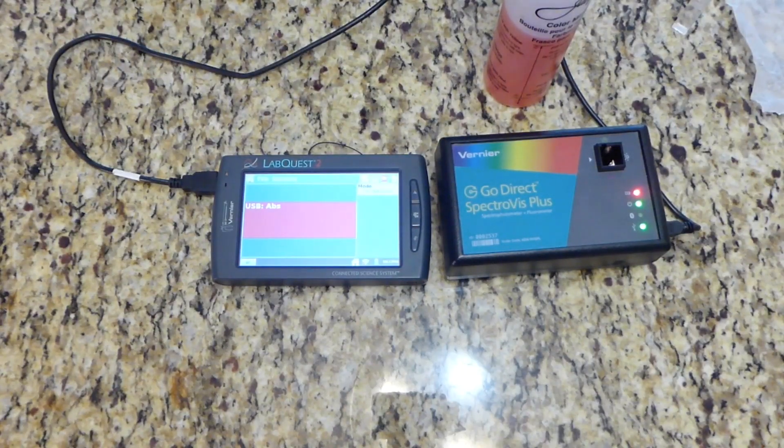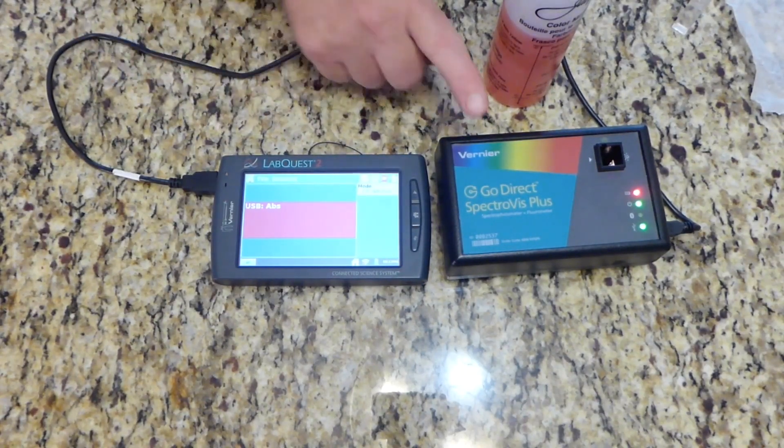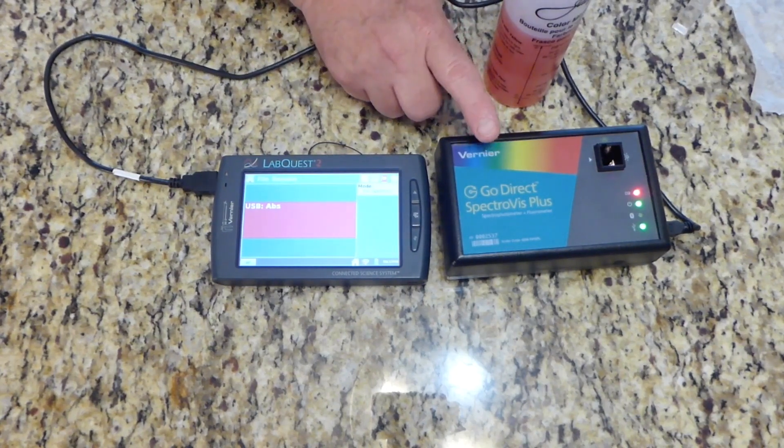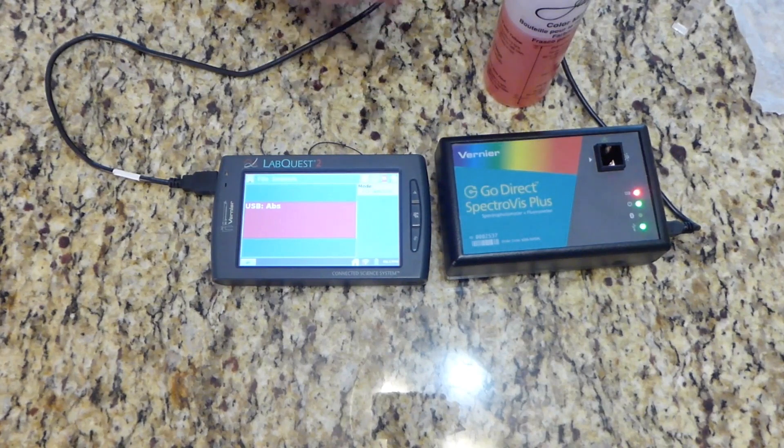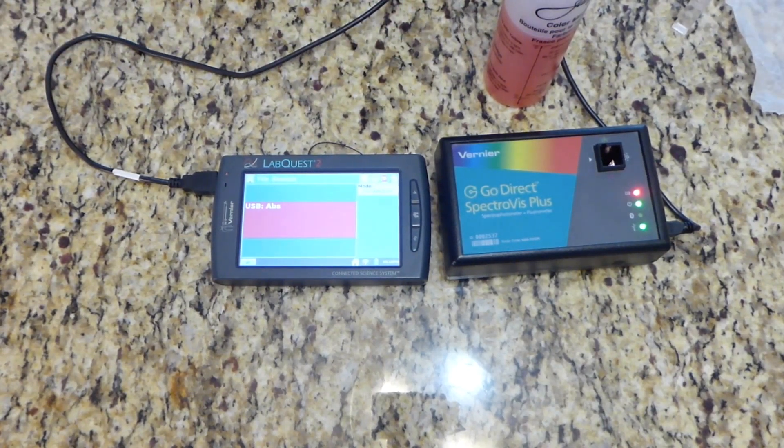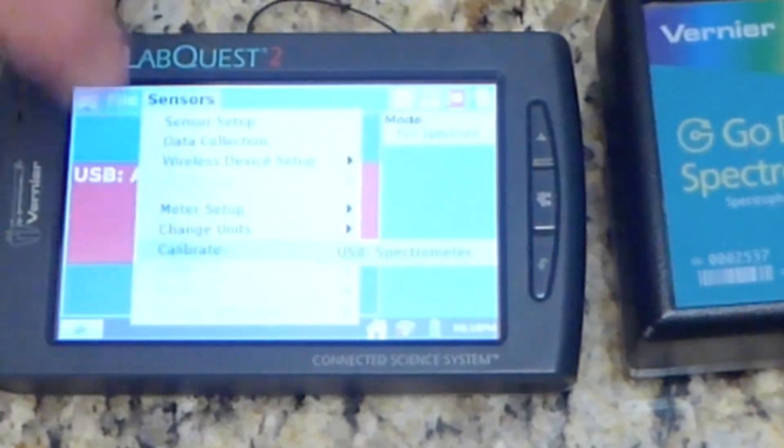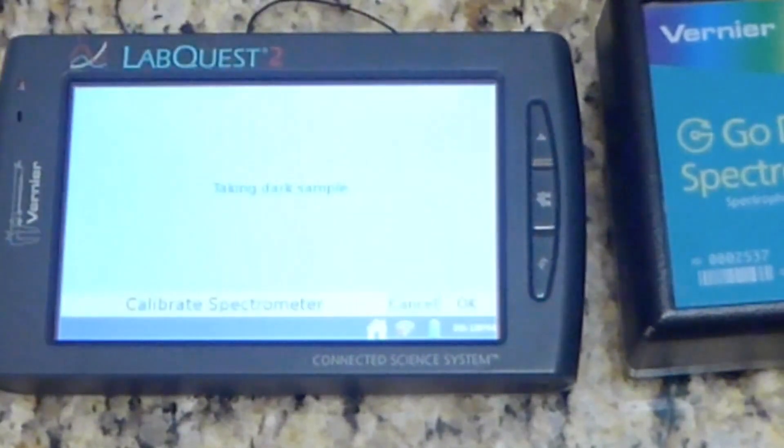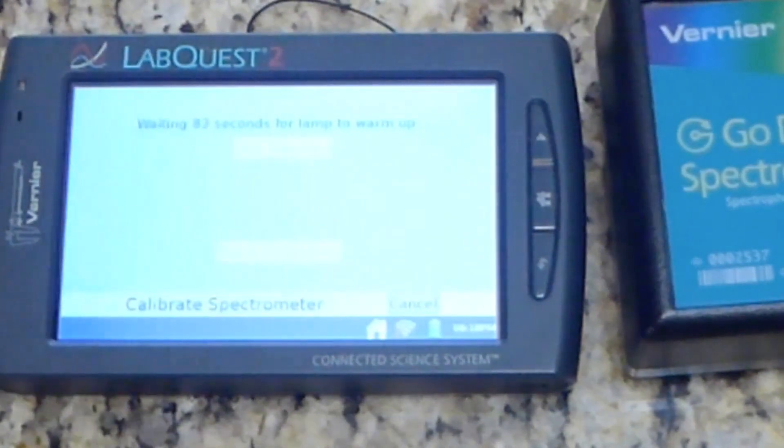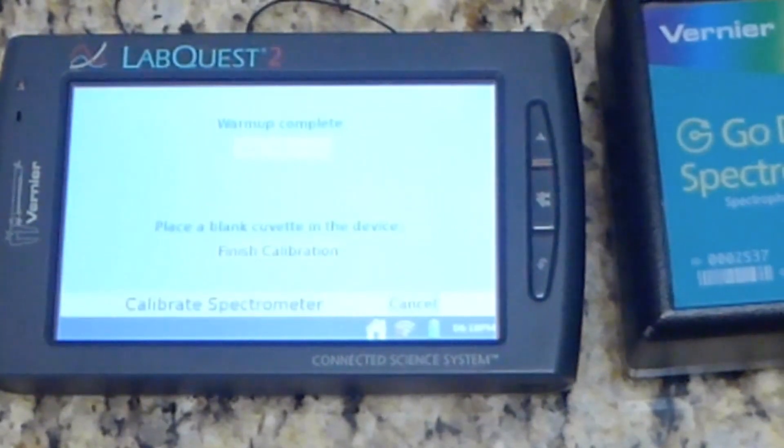There's another device that you can use. This one is called a spectrophotometer. This is different from a colorimeter in that it measures all the different wavelengths at one time. Once you plug it in, it'll automatically recognize what it's connected to. You push sensor, calibrate, and then UV spectrophotometer. It'll take a reading of just in the dark, so nothing in it. And then you have to wait for 90 seconds while it warms up.